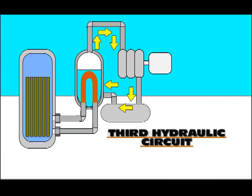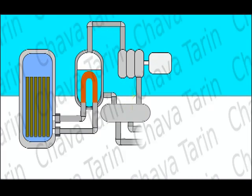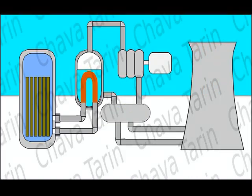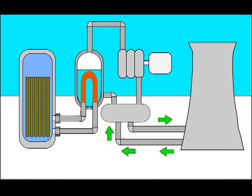The third hydraulic circuit is made up of the cooling system to operate the condenser, using water from a river or lake and cooling it by means of a cooling tower. This water is also not contaminated by radioactivity.